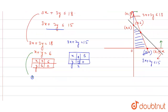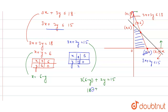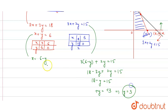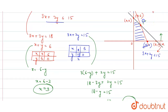From x plus y equals 6, we get x equals 6 minus y. Substituting into 3x plus 2y equals 15: 3 times (6 minus y) plus 2y equals 15, giving 18 minus 3y plus 2y equals 15, so 18 minus y equals 15, which means minus y equals minus 3, therefore y equals 3. Then x equals 6 minus 3, so x equals 3. The intersection point is (3, 3).